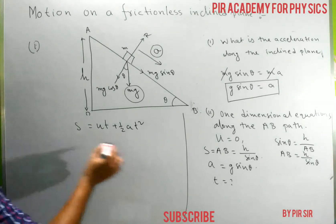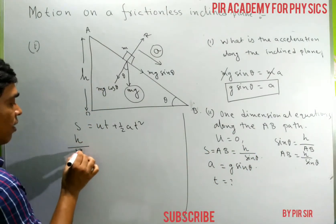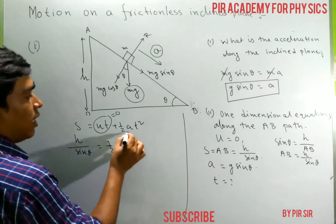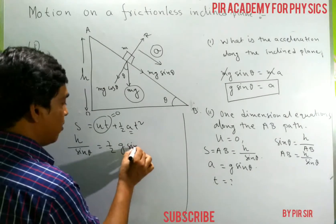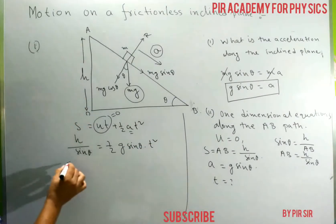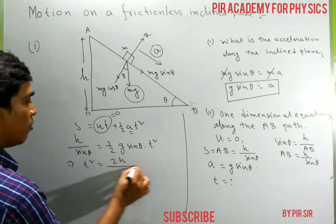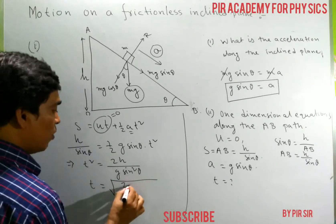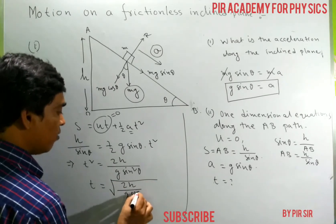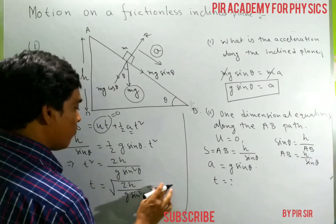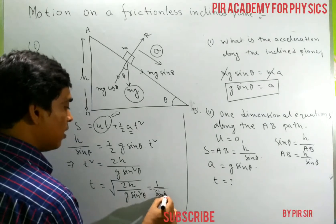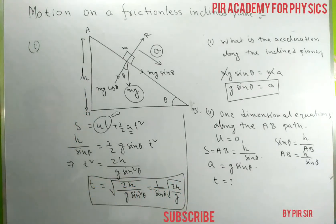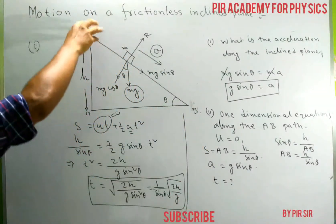Solving for T: T² = 2H / (g sin²theta), so T equals (1/sin theta) times the square root of 2H/g. This is the time taken by the particle to reach point B from A when starting from rest.